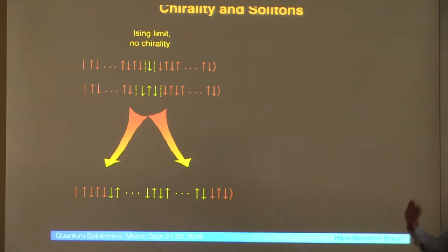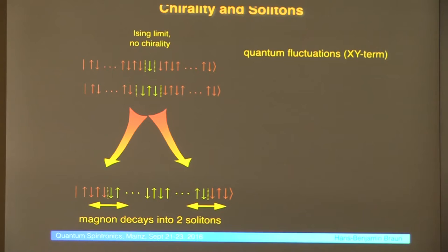Because all those states are degenerate, so you shouldn't really be talking about this bound state of two domain walls, but actually of freely moving domain walls, and it's actually the XY term which drives those around. And that's now what we saw more than 20 years ago, actually, on a rather curvy detour.